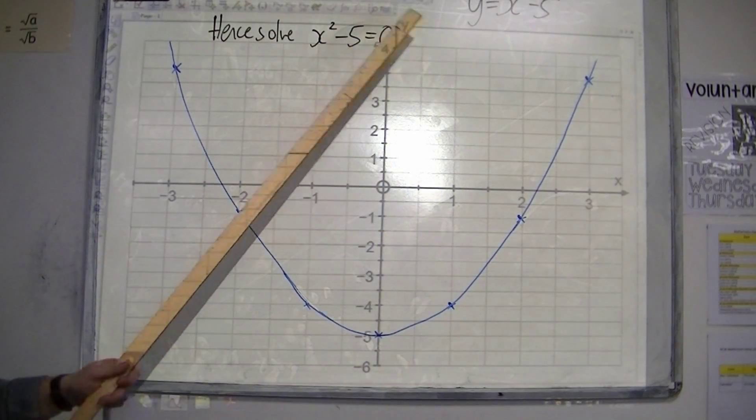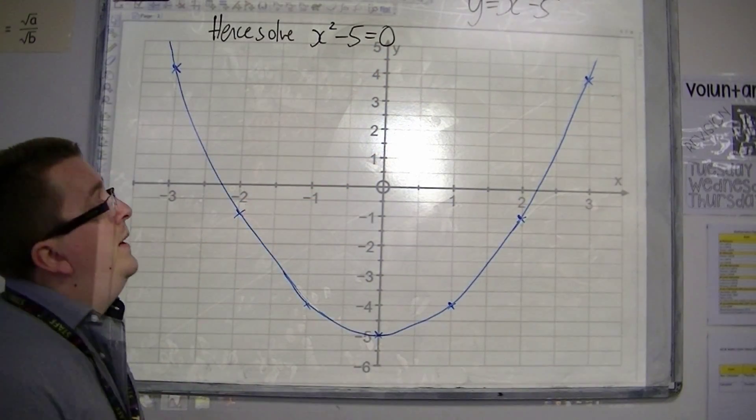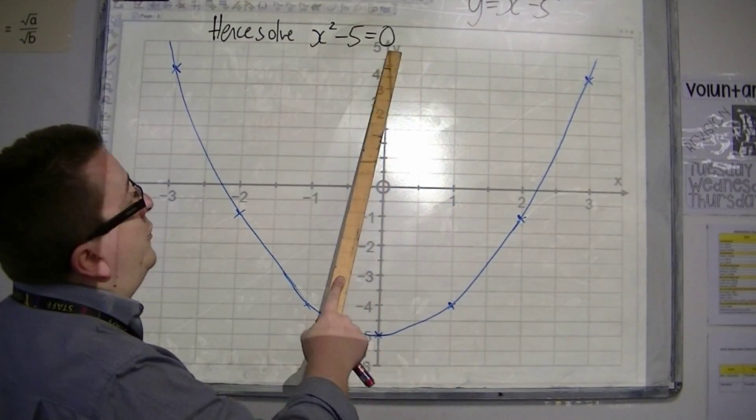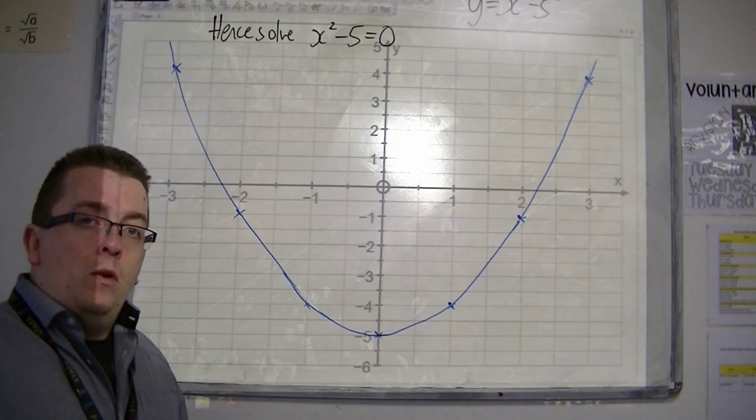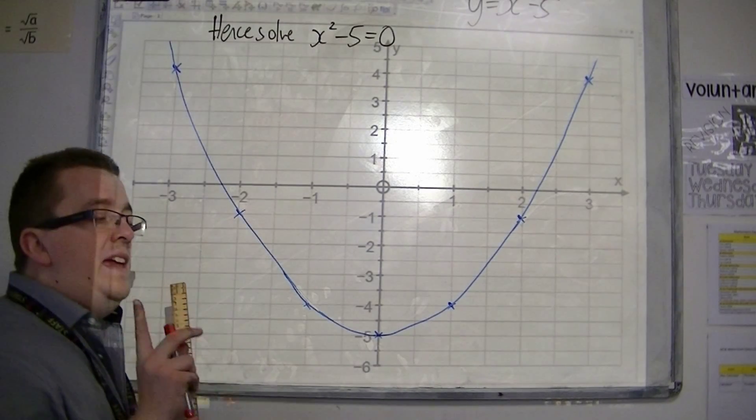Now, if we look at these two equations, what you should see is that the y has been swapped with 0. Y is now 0, i.e., y equals 0.